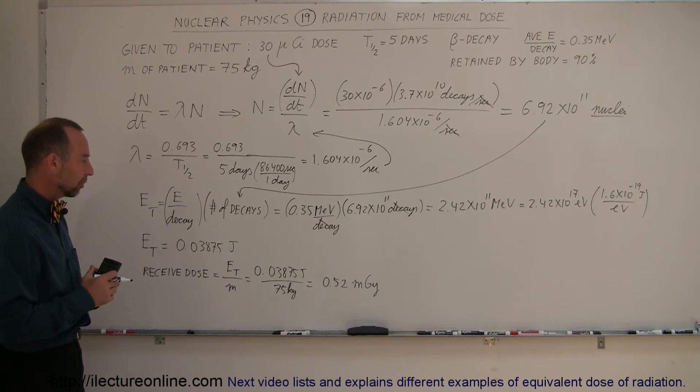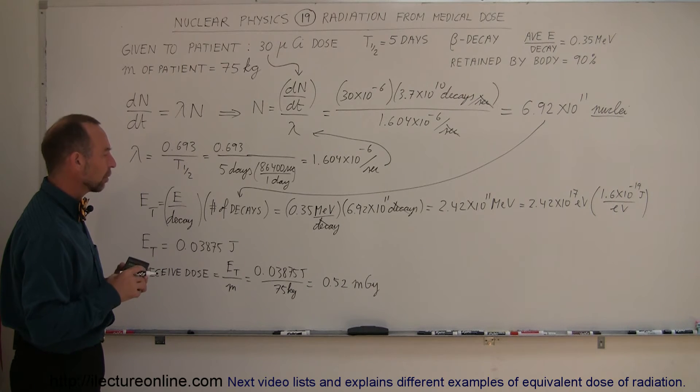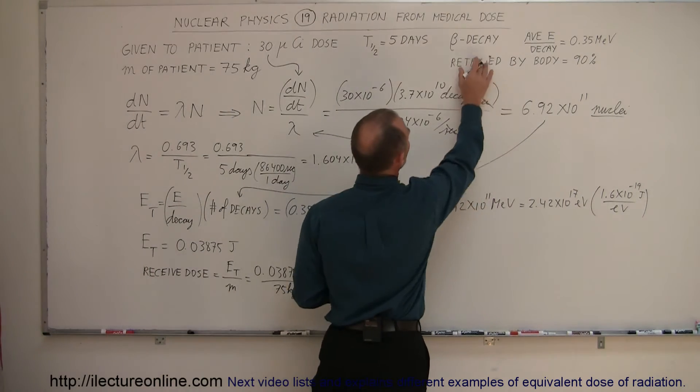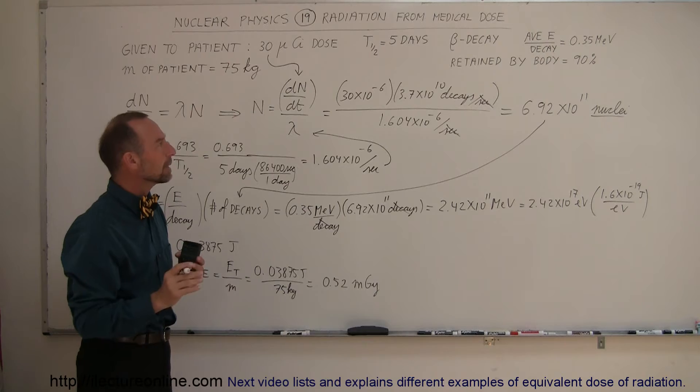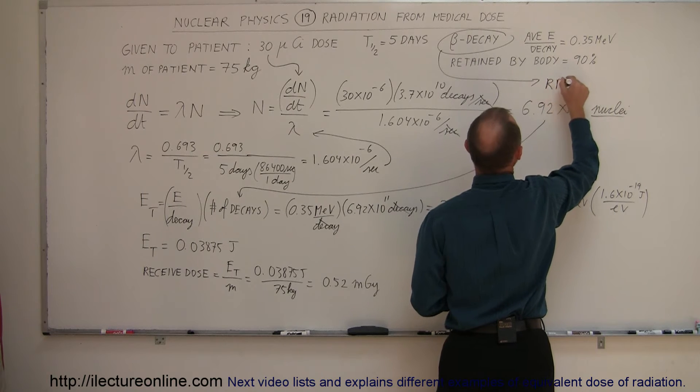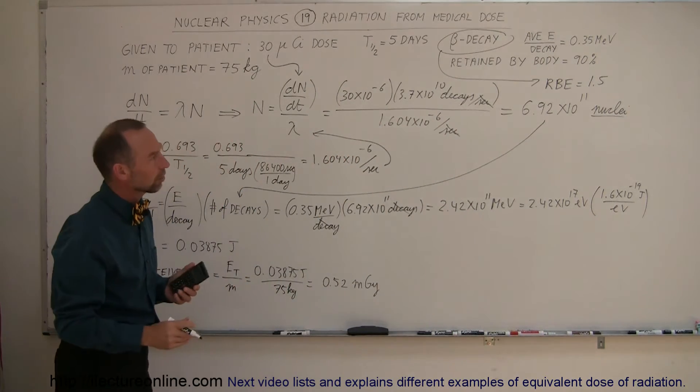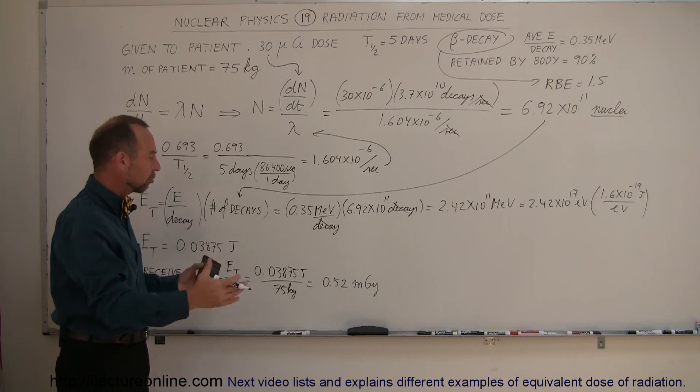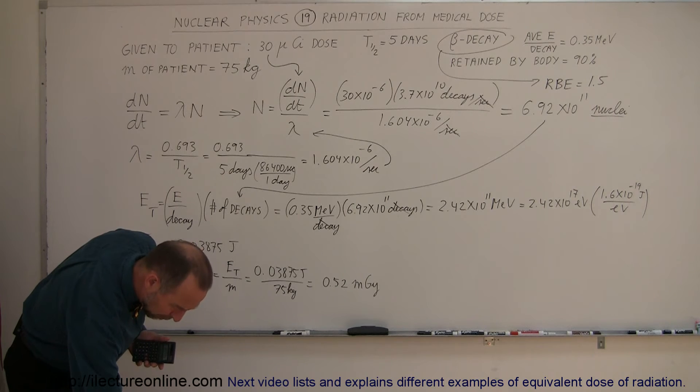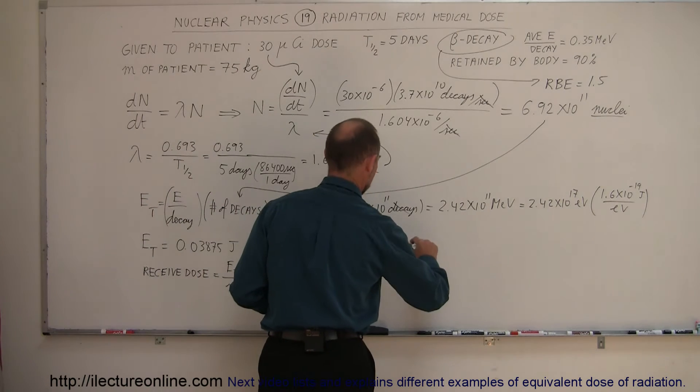All right, so that would be the energy in joules per kilogram of body mass received. But of course, that's not the effective dose, because the effective dose is the dose taken into account what would be the effect by the type of radiation we're dealing with. We're dealing with beta decay, so we have to find the RBE. For beta decay, the RBE is equal to about 1.5 average - maybe two when they're very energetic electrons, and one when they're very weak electrons. So let's just take the average of 1.5.